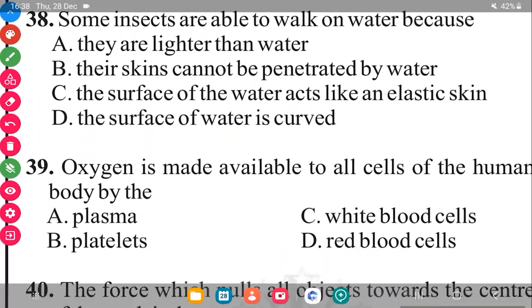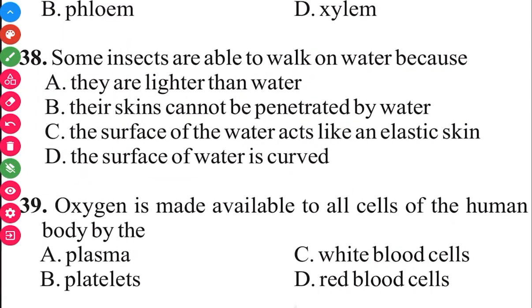Oxygen is made available to all cells of the human body by the red blood cells. The answer in 3, 2, 1 is D, red blood cells.